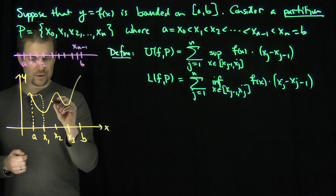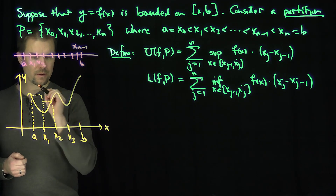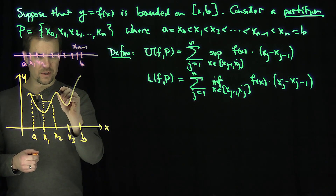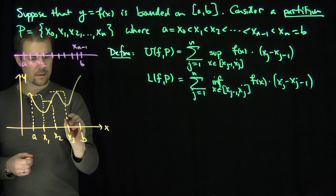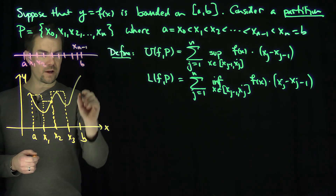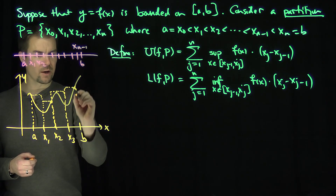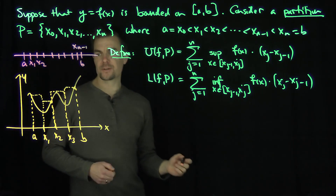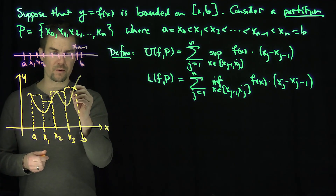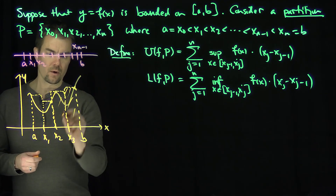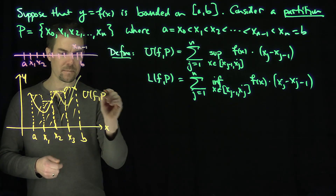Continuing with the upper sum: over the next interval, the supremum corresponds to x2, giving another rectangle area. Between x3 and x4, the supremum is an interior point, not an endpoint. And between x3 and b, the supremum occurs at another interior point. So the upper sum U(f, P) gives us the total area of those four rectangles — that orange area is the upper sum.